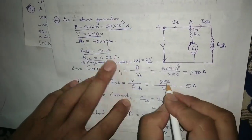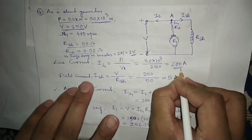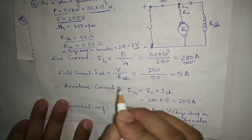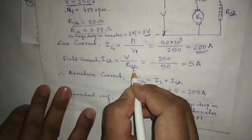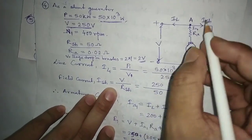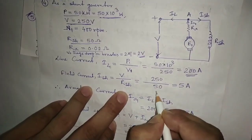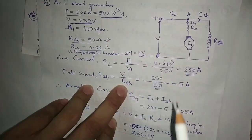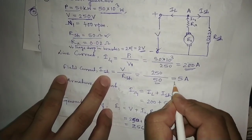For the generator case, the line current IL1 is 200 ampere. Now, the field current Ish equals V divided by Rsh. Drawing the generator circuit diagram, Ish equals V by Rsh — V is 250 volt and Rsh is 50 ohm.